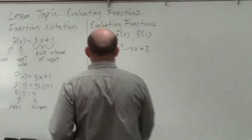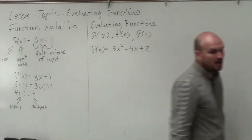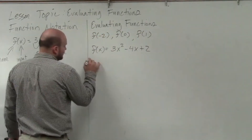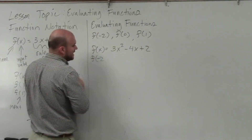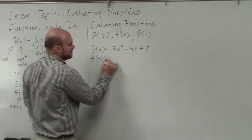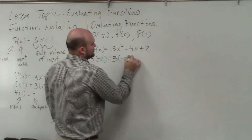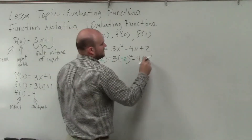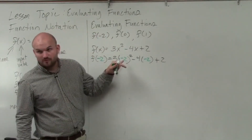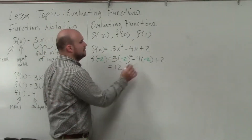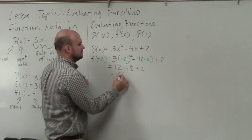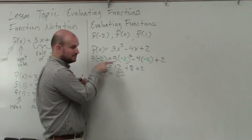Basically, all we're going to do is replace our input value into our function rule. So if we want to evaluate f of negative 2, we change our input value from x to negative 2, and in our rule we replace every x with negative 2. So it's going to be 3 times negative 2 squared minus 4 times negative 2 plus 2. Negative 2 squared is 4, times 3 is 12. Negative 4 times negative 2 is positive 8, then plus 2. Therefore f of negative 2 is going to equal 22. Input is negative 2, output is 22.